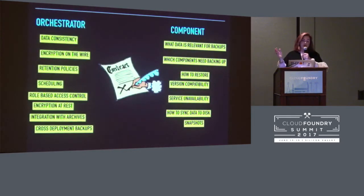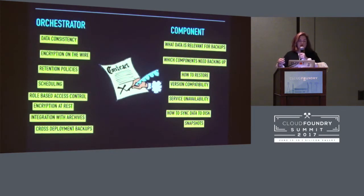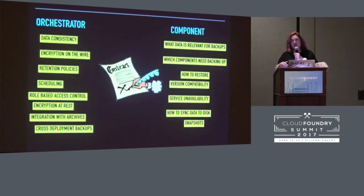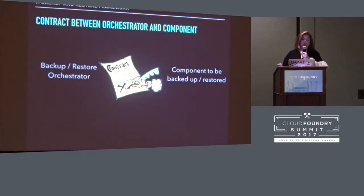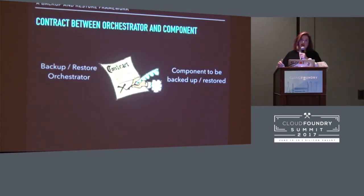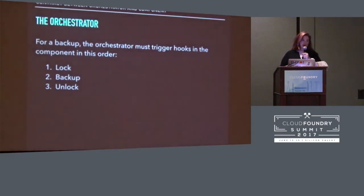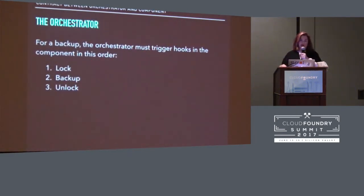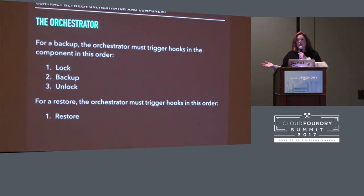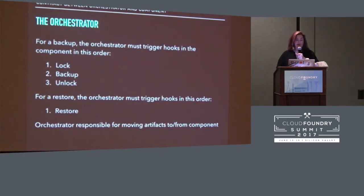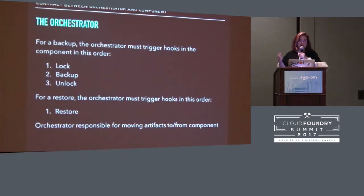We assigned these two categories roles. The first role is the orchestrator, and the other role is the component. We've crafted a contract between these two roles. We have a backup and restore framework based on a contract that sets out the requirements for the orchestrator and the component. The orchestrator expects the component to implement hooks to do the backup and restore. The hooks are lock, backup, and unlock. The orchestrator has to trigger these hooks in this prescribed order. The only hook for restore is restore. The orchestrator is responsible for moving the backup artifacts after a backup is taken, and putting the artifacts in the right place before a restore.